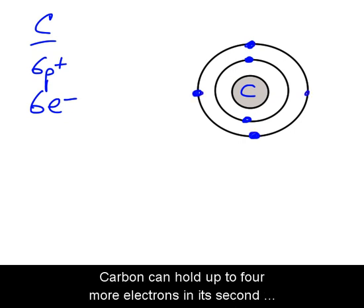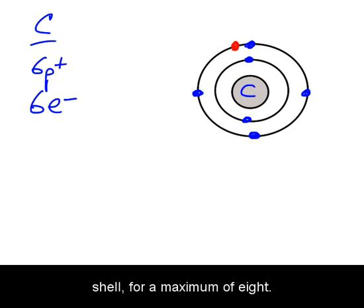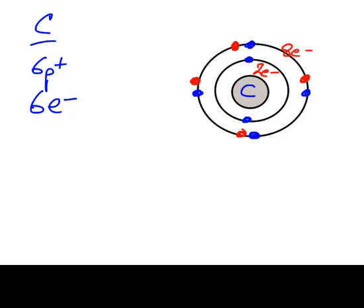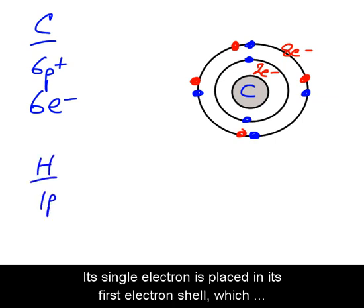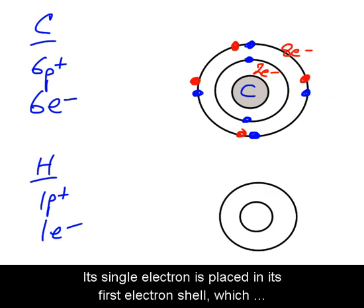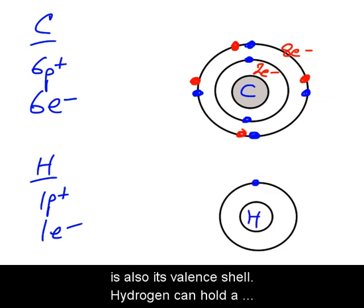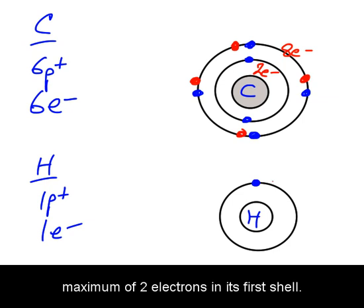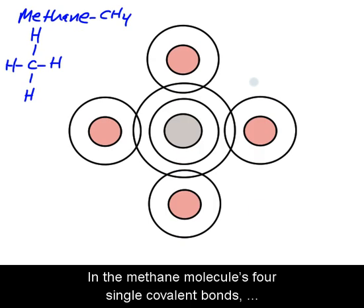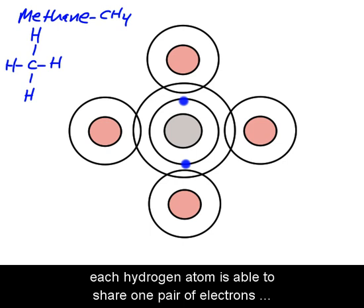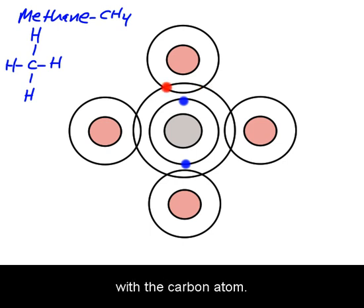Carbon can hold up to four more electrons in its second shell for a maximum of eight. An atom of hydrogen has one proton and one electron; its single electron is placed in its first electron shell, which is also its valence shell. Hydrogen can hold a maximum of two electrons in its first shell. In the methane molecule's four single covalent bonds, each hydrogen atom is able to share one pair of electrons with the carbon atom.